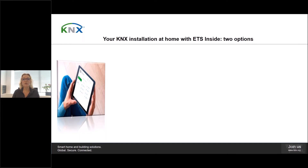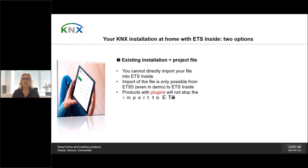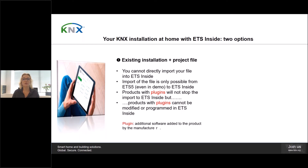Now that you know how to count the number of products, the question remains: what is a product with a plugin and why is this relevant? In the case that you are confronted with an existing installation and its project file, you may have plugin issues with the ETS Inside. Some manufacturers integrate additional software to their products. This additional software is called a plugin, and it is used to add extra functions to the basic ones existing in the product. This is especially relevant when you want to work with the ETS Inside, as this software is not compatible with such plugins. You might ask yourself, how am I supposed to know if I have such products with plugins in my installation?